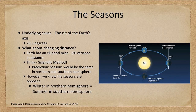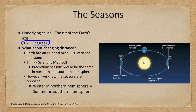First of all, what is the underlying cause of the seasons? Well, it is the tilt of Earth's axis by 23 and a half degrees. The fact that it is exactly 23 and a half degrees is not what causes the seasons — it is the fact that there is a tilt.